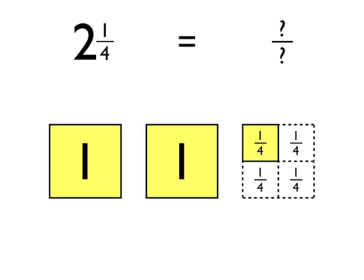In the mixed number, we've got two and one quarter, so you need to get in your mind that we're talking about quarters. So the denominator of the improper fraction — the denominator of our answer — is going to be four. It's going to be so many quarters.